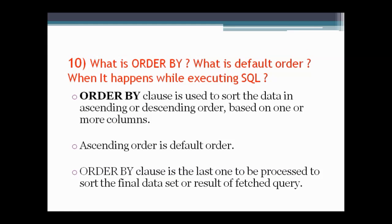The next question asks what ORDER BY is, what its default order is, and when it is processed during execution. ORDER BY is a clause used to sort data in ascending or descending order based on one or more columns. The default order is ascending. The ORDER BY clause is the last one to be processed — it sorts the final data set or result of the entire query.